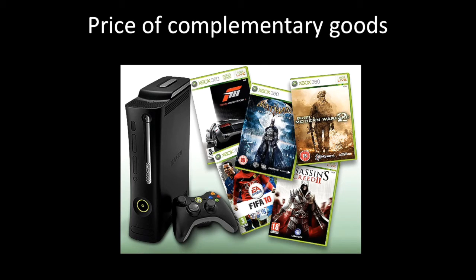Next we want to take a look at complementary goods — these are goods that tend to be consumed together. First we can look at the Xbox. If Microsoft gave out free Xboxes, we could imagine that the demand for games would rise. If the price of Xboxes were cut in half, you could again imagine that demand for games would rise. And if the price of Xbox 360 were to rise, demand for games should fall.